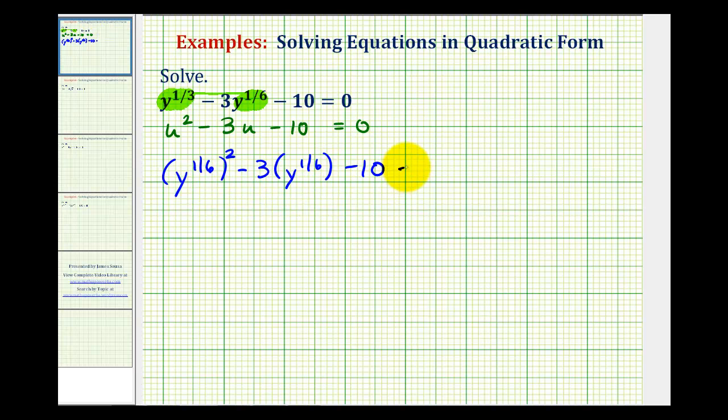So if this does factor, this will factor into two binomial factors. But now instead of using u and u or y and y, we're going to use y to the one-sixth and y to the one-sixth. And now we want the factors of negative 10 that add to negative three. That would be negative five and positive two.